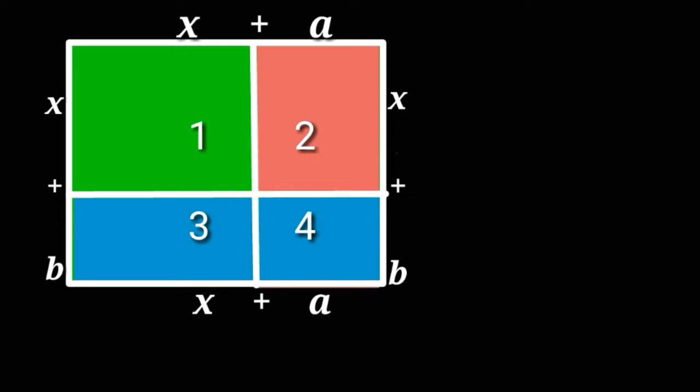Now, we will find the area of all the boxes inside the rectangular sheet. The area of the first box is x². Box 2 is ax. Box 3 is bx. And the last box is equal to ab.